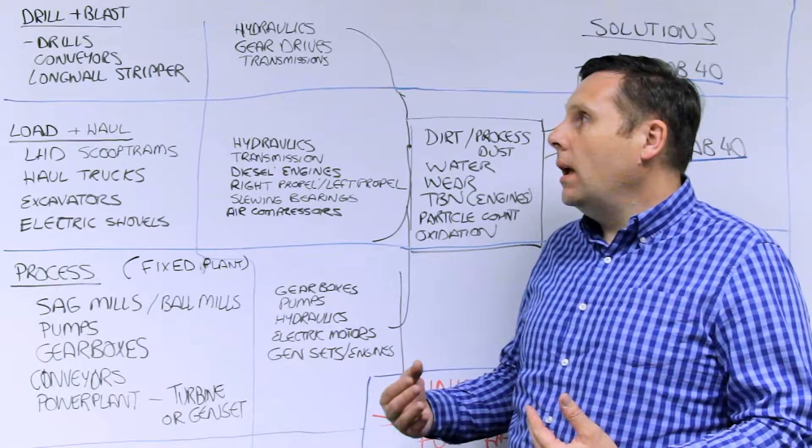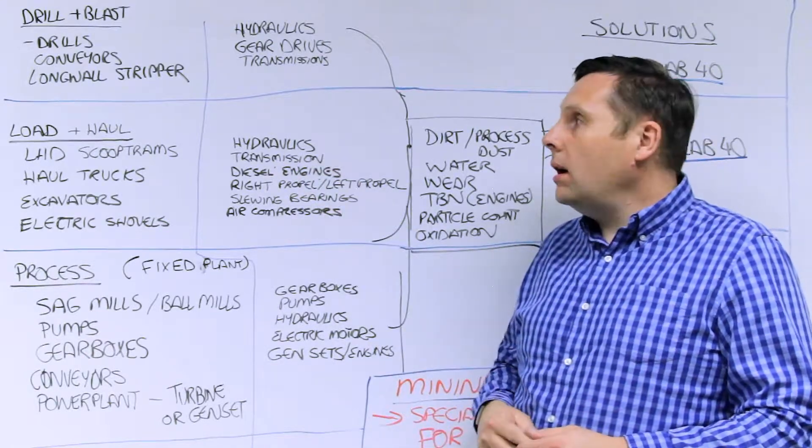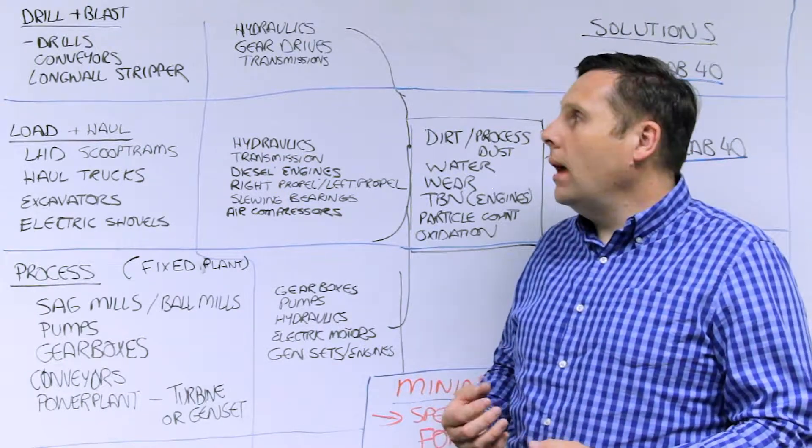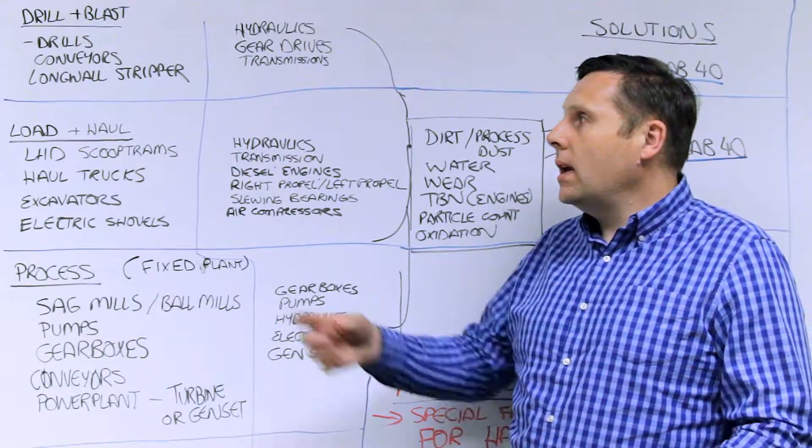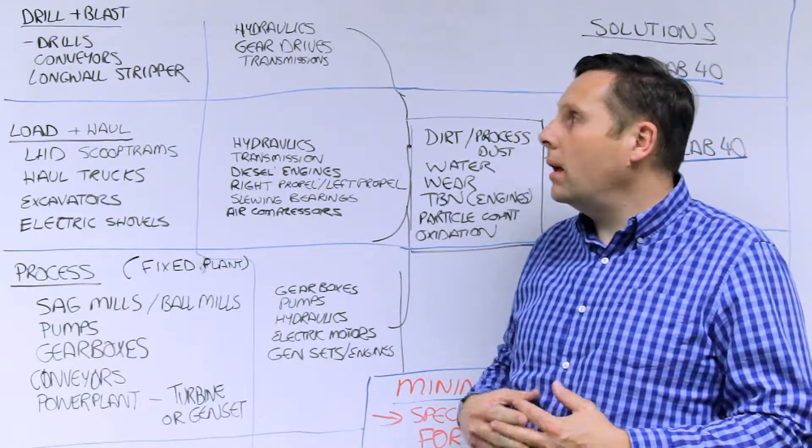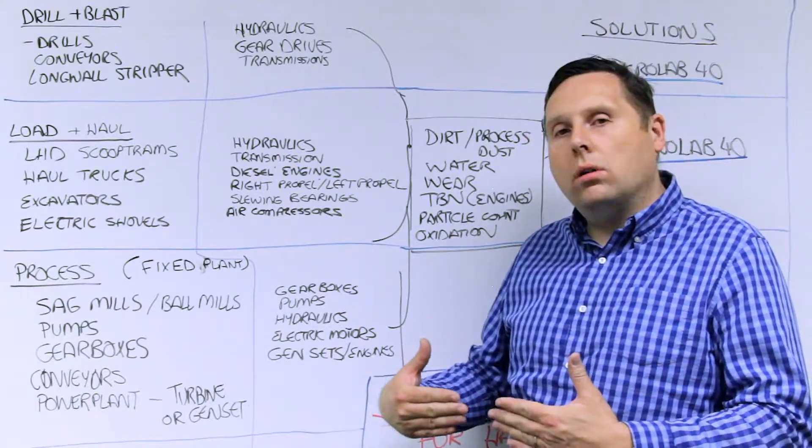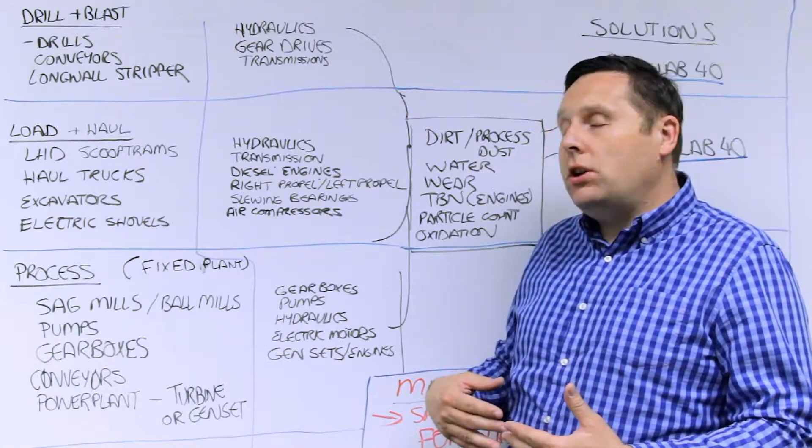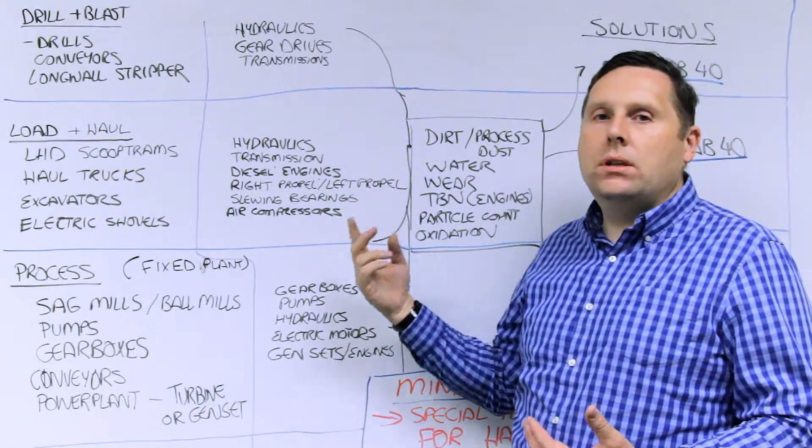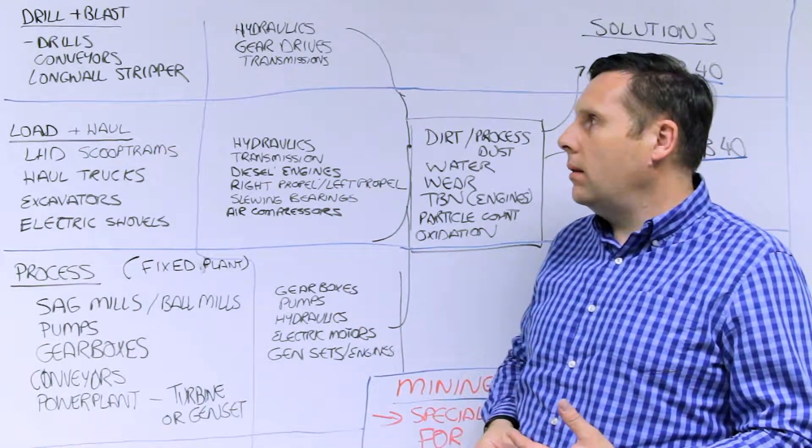Let's just look at the types of equipment that we would expect to see in different stages of the mining operation. In the drilling and blasting areas, if it's in open pit or underground, you're going to have drills, conveyors, these are large systems. Underground, you're going to have more complex longwall stripper style systems that are going after longwall coal mining. In this situation, there's a lot of components here which are hydraulics, gear drives, transmission systems that are all present on these systems. There can be also some engines, especially on the open pit systems.